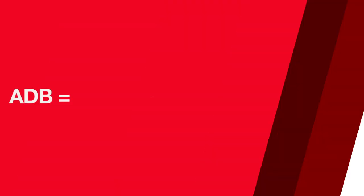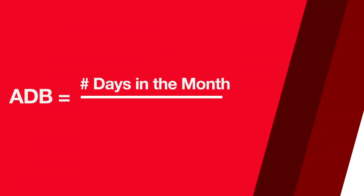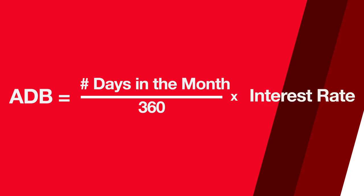Now that you're familiar with the most important banking terms, let's try to compute for interest. As a general rule, you may compute your interest earned for a month by using this formula: your ADB times the number of days in the month divided by 360, multiplied by the bank's interest rate.